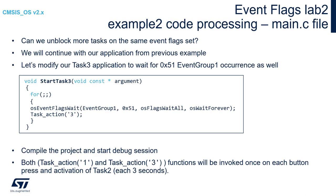We can unblock more tasks on the same event flags set. To test this, we will involve Task3. Let's modify the startTask3 function so it will also wait for the 0x51 mask within Event Group 1. Once successful, it will send '3' over the SWO interface. We will keep the rest of the code unchanged.